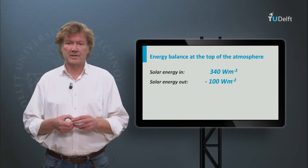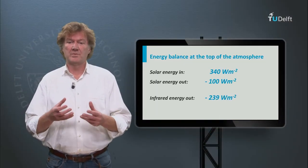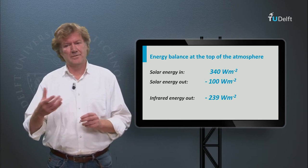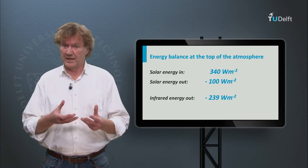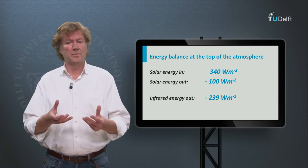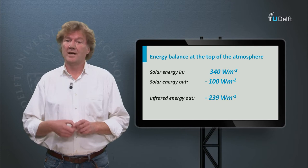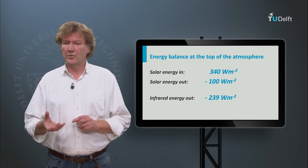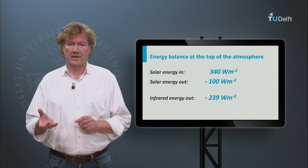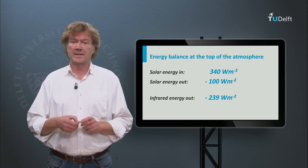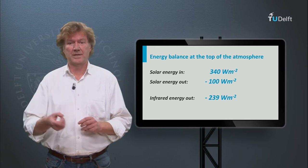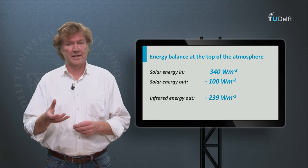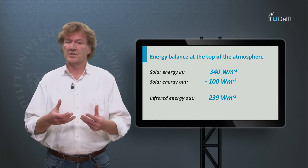At the top of the atmosphere, the earth system is in approximate equilibrium. The energy entering the system roughly equals the energy leaving it. If more energy would enter than leave, then the earth would warm and start to radiate more energy until equilibrium is reached again. Around 340 watts per square meter entering the earth, 100 is reflected and 239 is emitted into space as infrared radiation. As we can see, as much energy is leaving the earth as it is entering it — a state of approximate equilibrium.